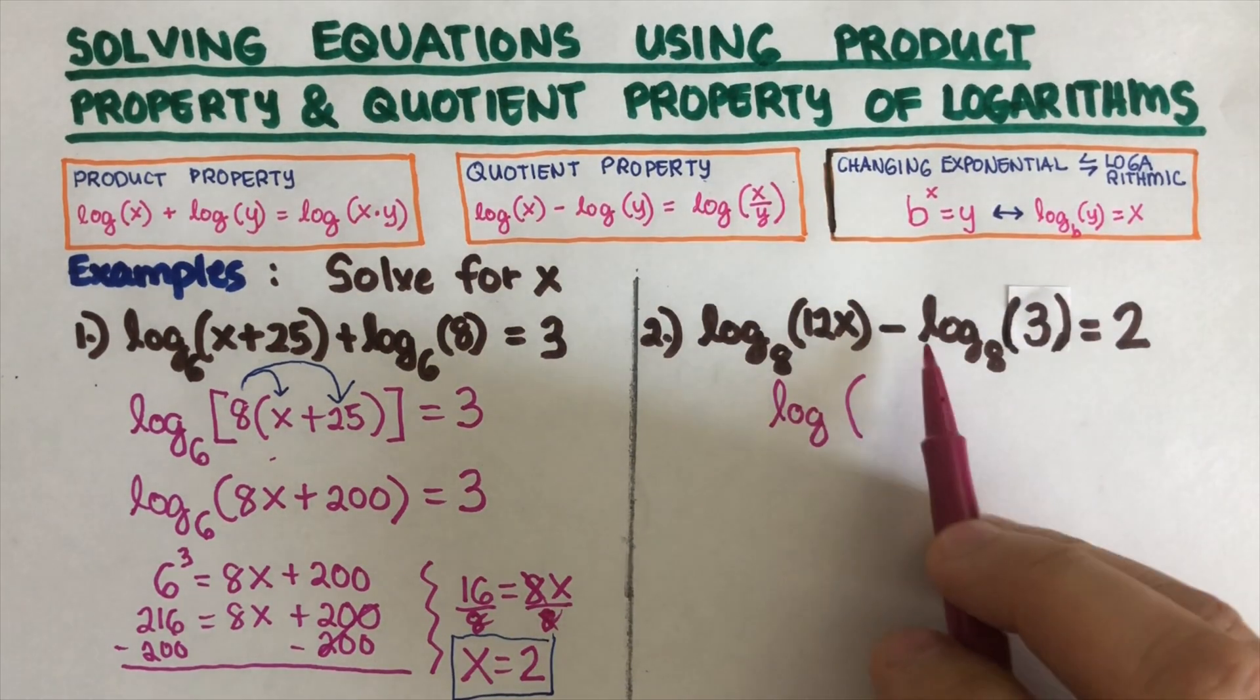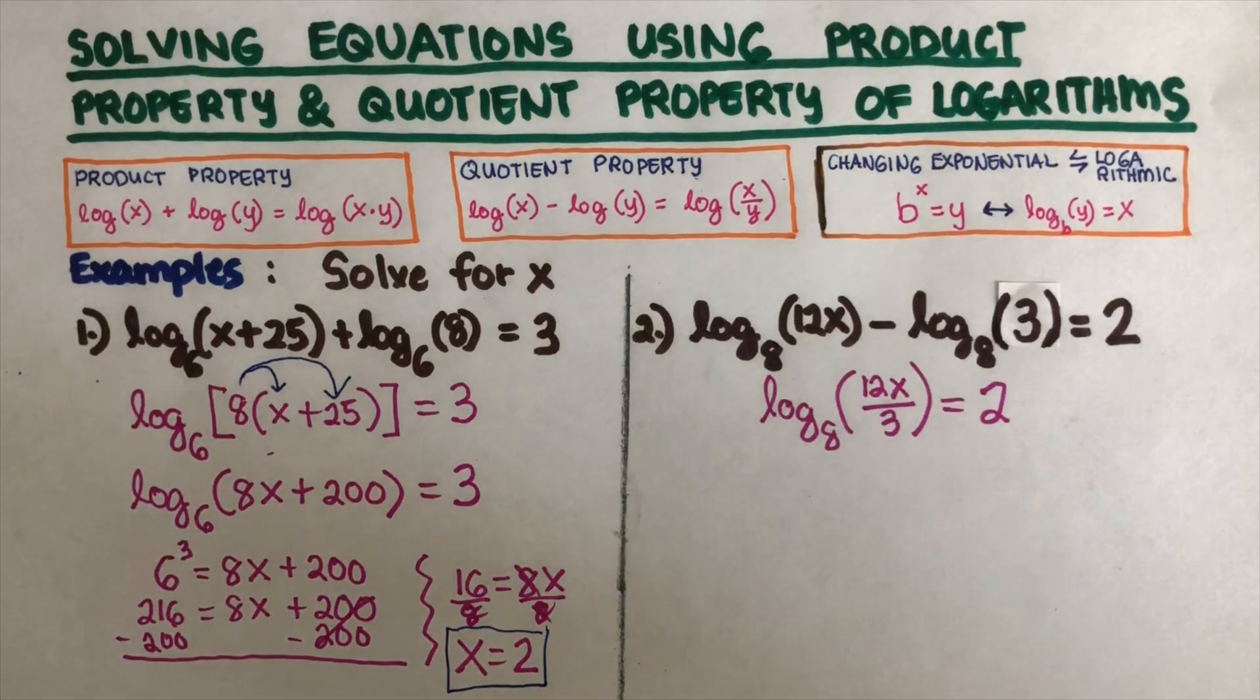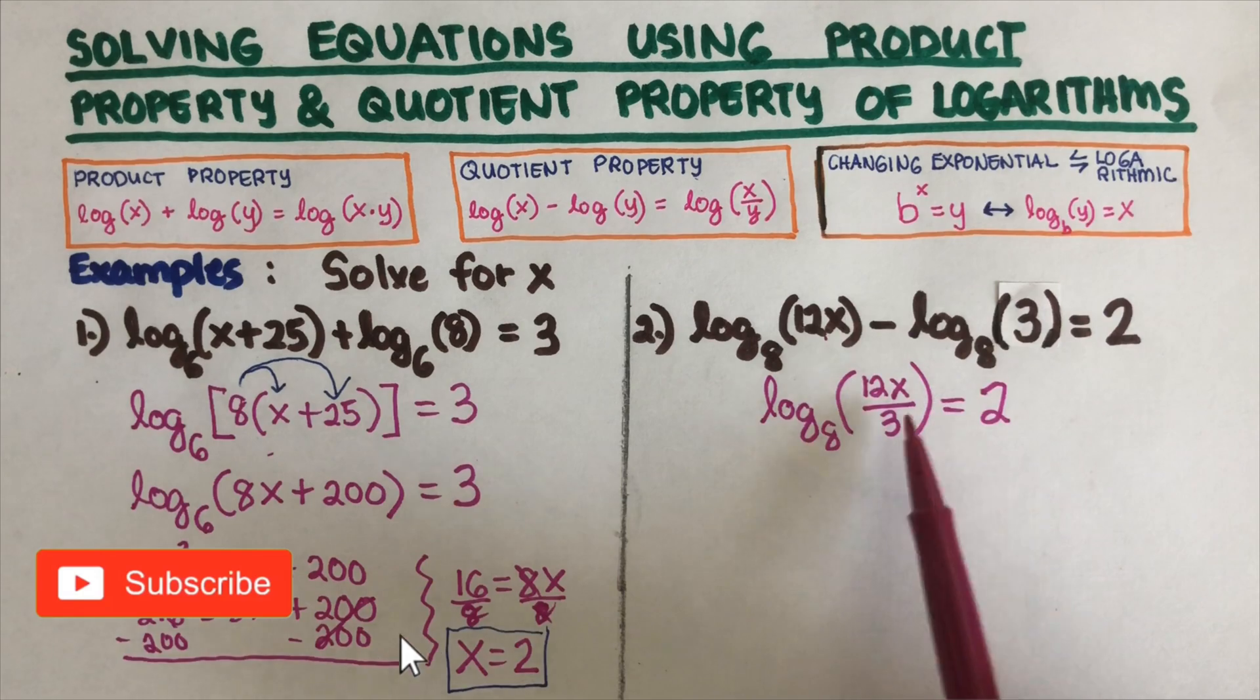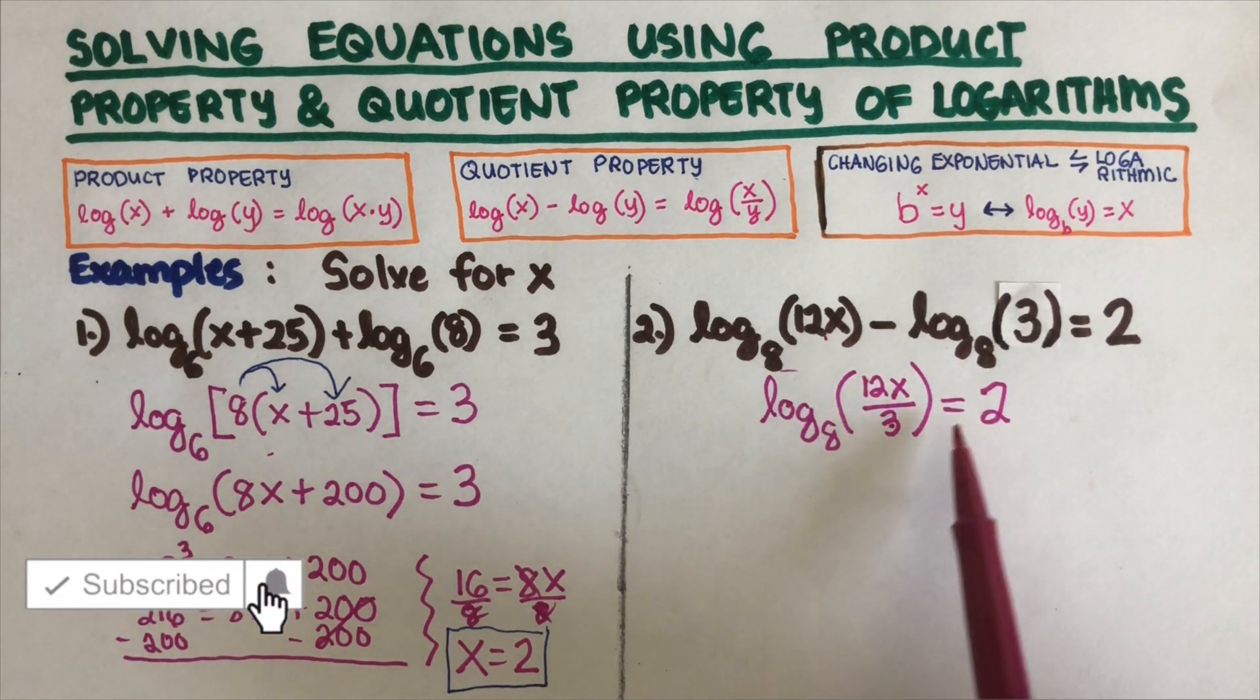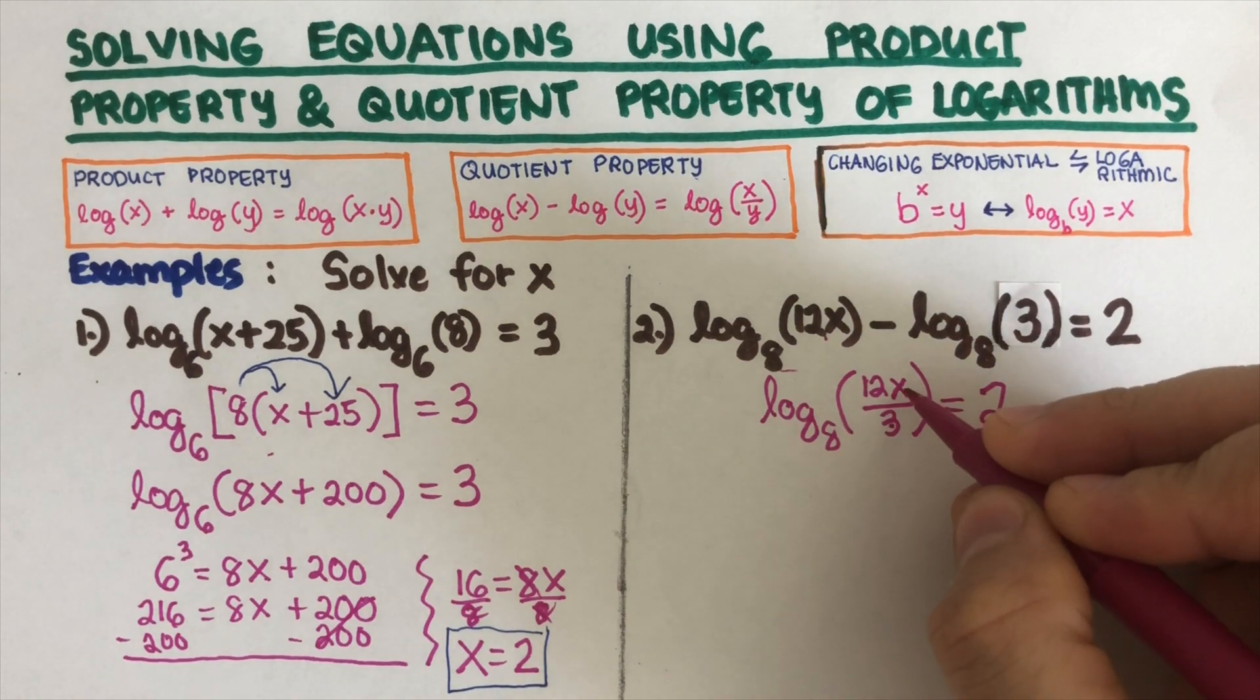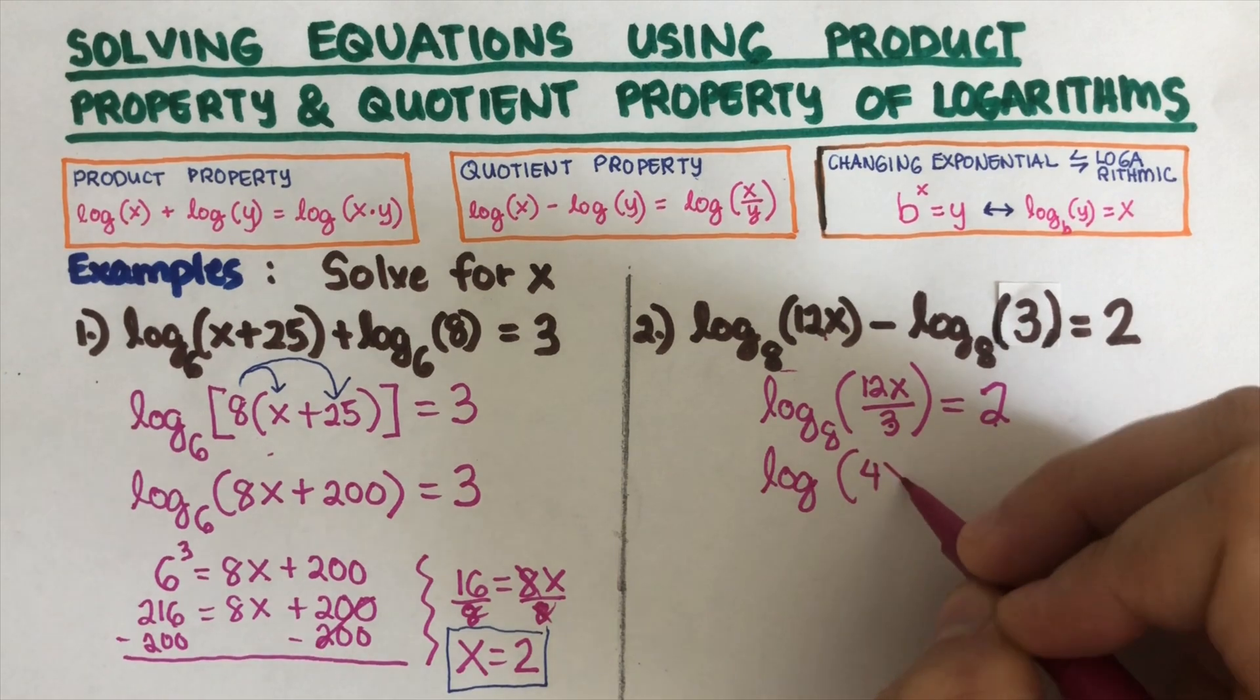Since this is a minus, we divide the arguments, so that would be 12x divided by 3 to the base 8 is equal to 2. From here I can simplify the 12x over 3, that would be 4, so this is log of 4x to the base 8 is equal to 2.